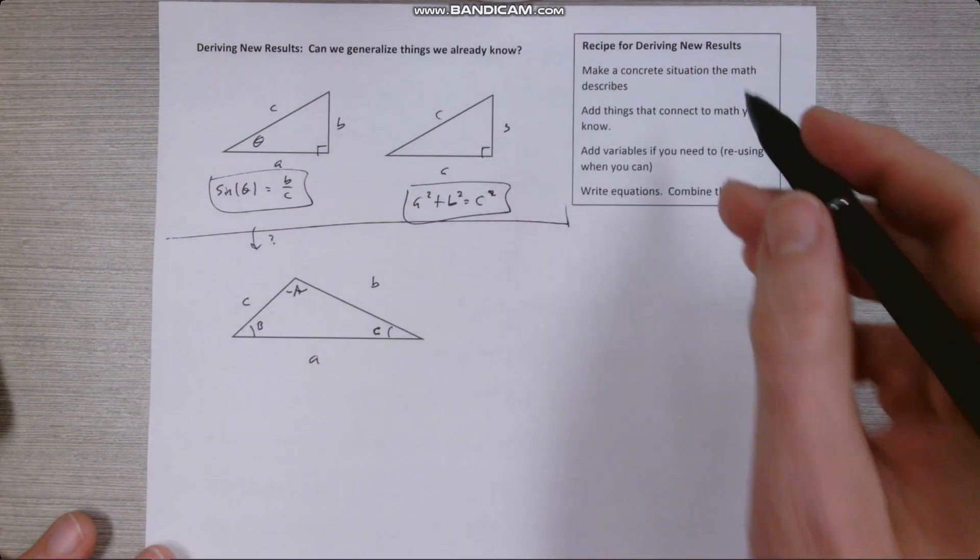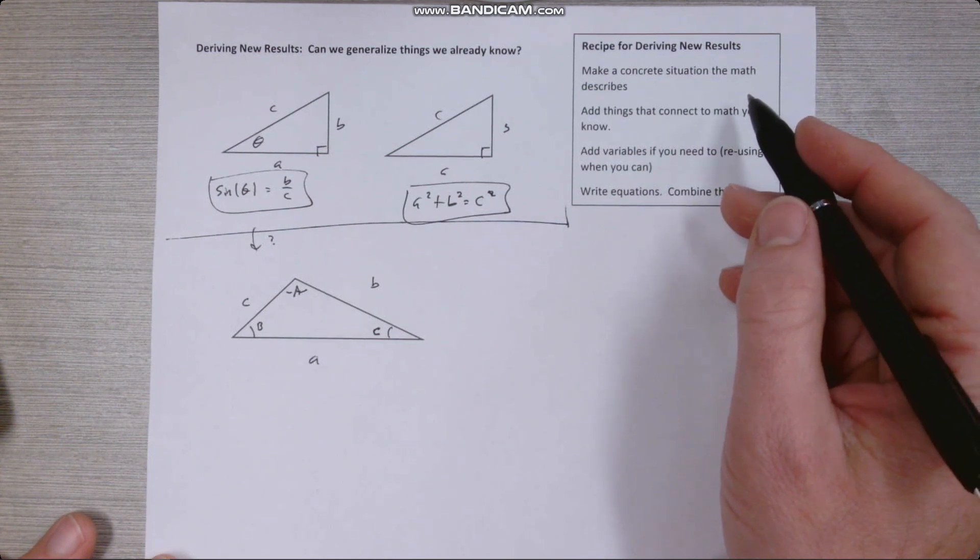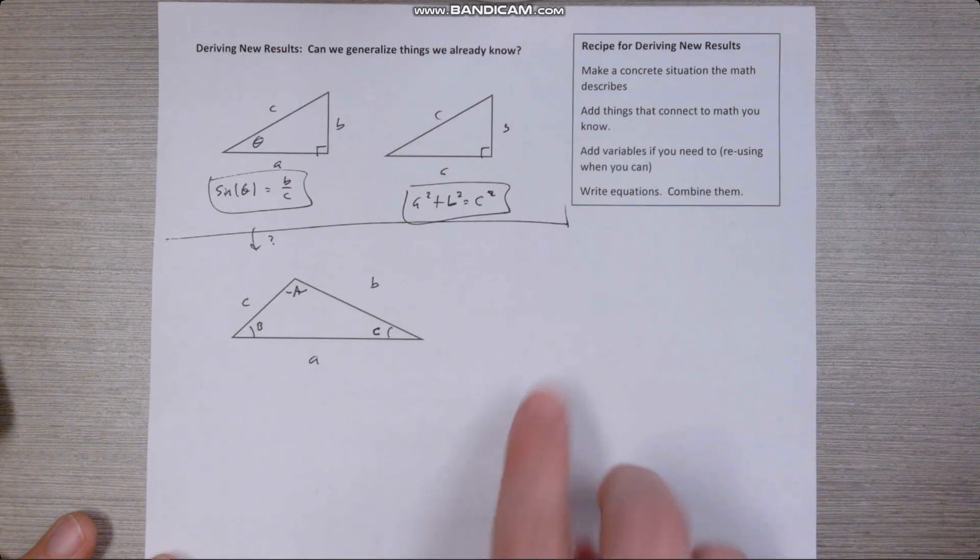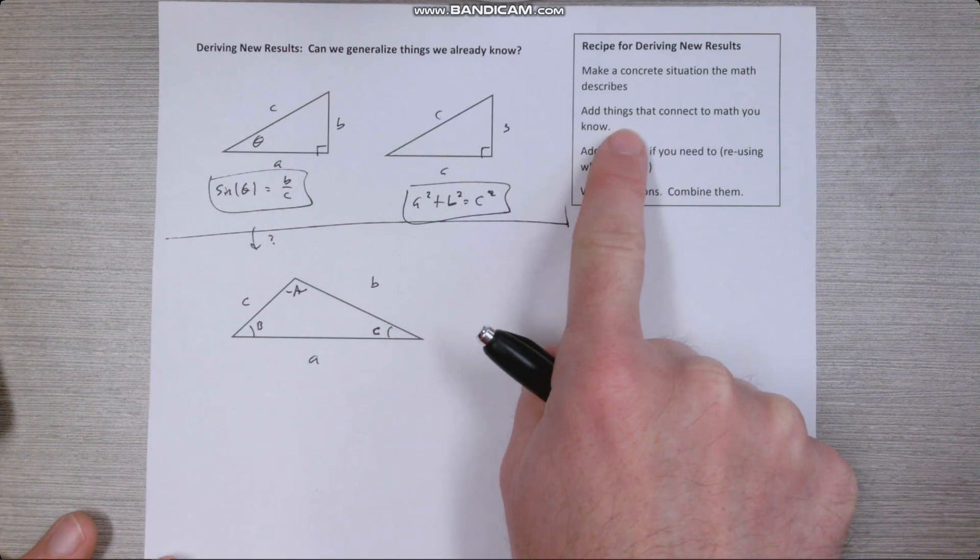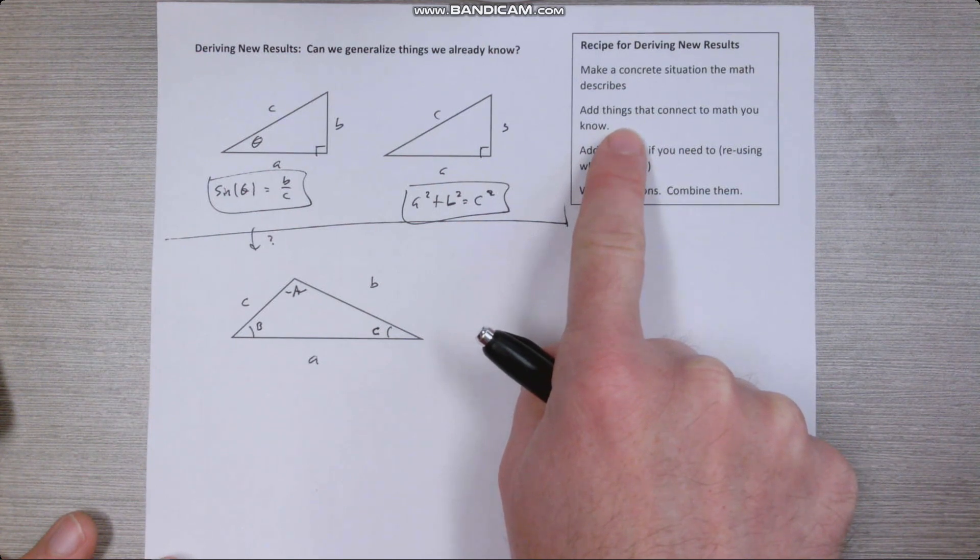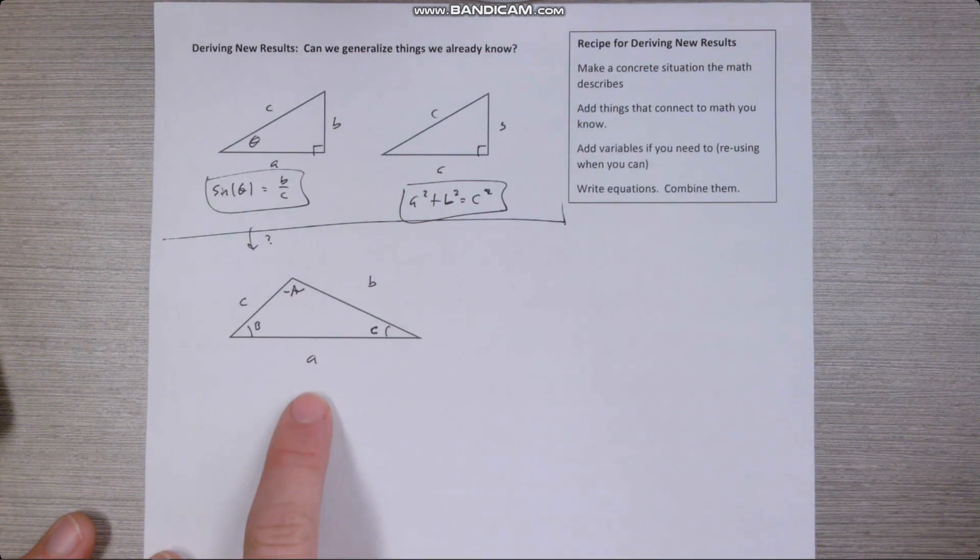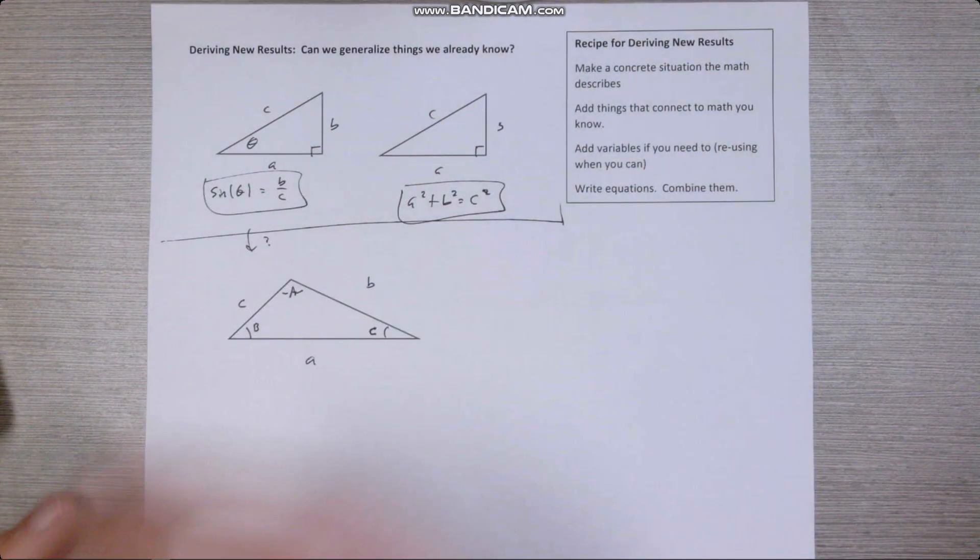So let's follow this recipe. So usually when you're trying to derive new results, you'll make a concrete situation that the math describes. And this one will make more sense when we're trying to prove a particular result. Then we're going to add things that connect to math we know. So here we have a general triangle and the whole point of what we're doing is that we don't know very much math that connects here. So what could we add that would make this situation have math that connects to it?